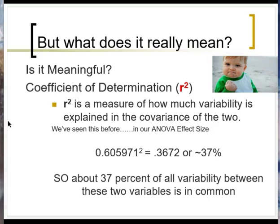Just like our other tests, even if you have a significant correlation, that doesn't mean it's particularly meaningful. We have a secondary metric for that called the coefficient of determination, or R². We've seen this before with ANOVAs. We literally just take the correlation we calculated and square it. This tells us what percentage of the total variability in these data can be explained by the covariance between the two variables. With our 0.605 correlation, about 37% of all variability between these two variables is varying in common. In nature, it's uncommon to see really high R² values, so use your ecological interpretation skills.